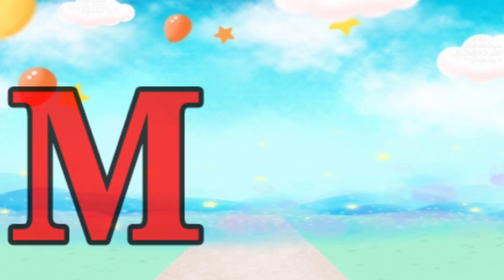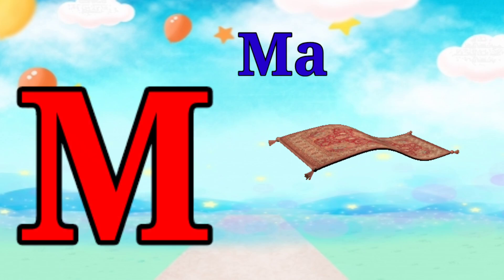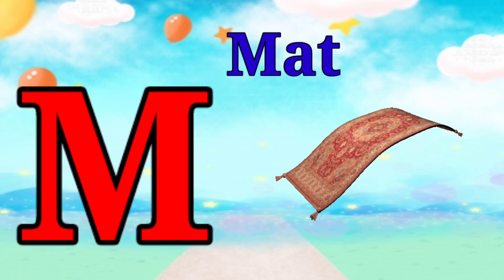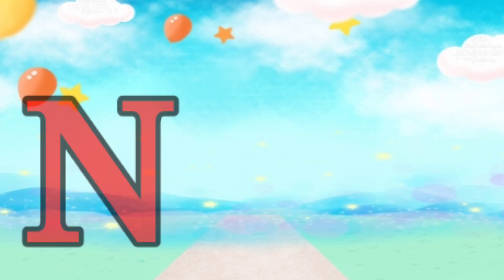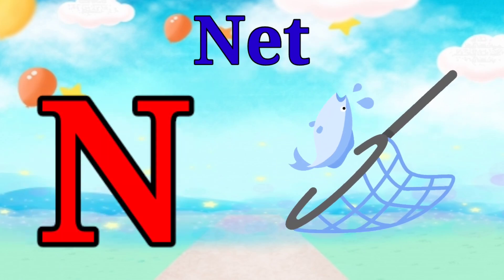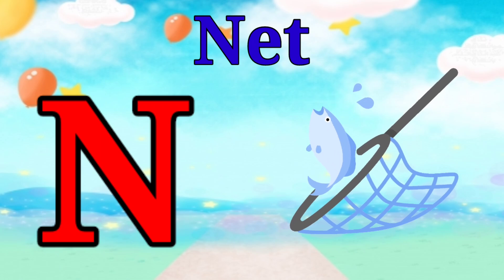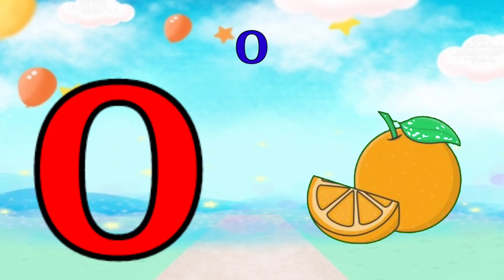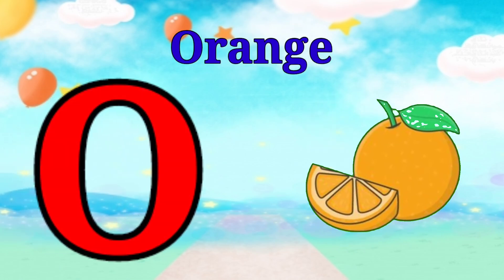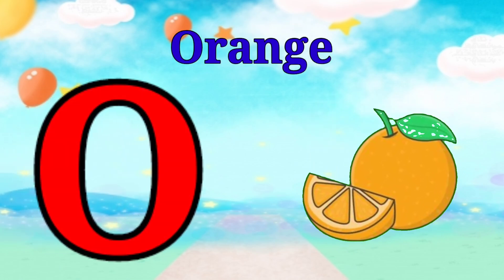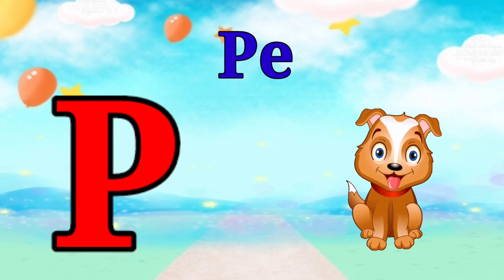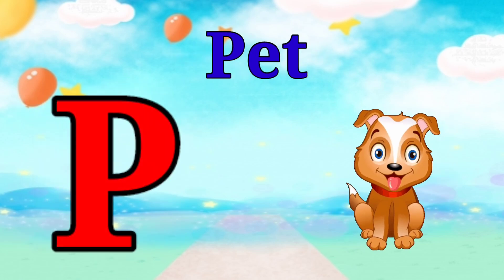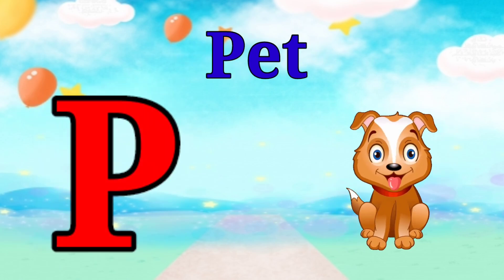M is for mat, m-m-mat. N is for net, n-n-net. O is for orange, o-o-orange. P is for pet, p-p-pet.